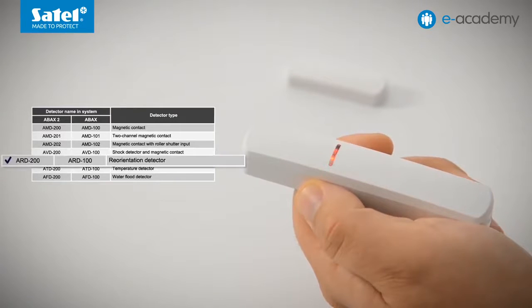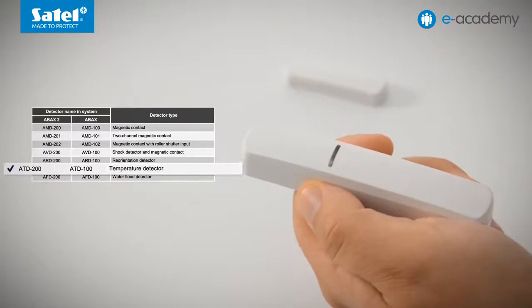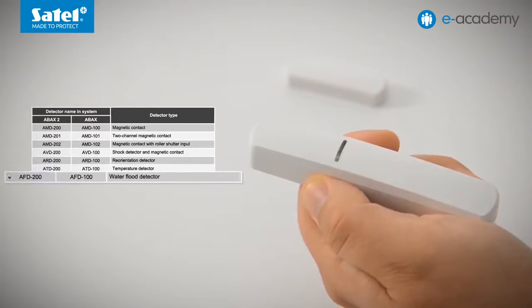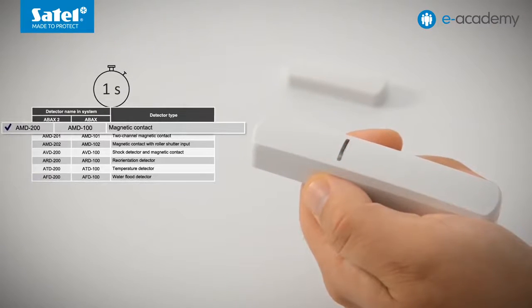Six flashes: temperature detector. Tap again to go to the last mode. The LED flashes seven times: water flood detector. The next tap will bring you back to the first mode.